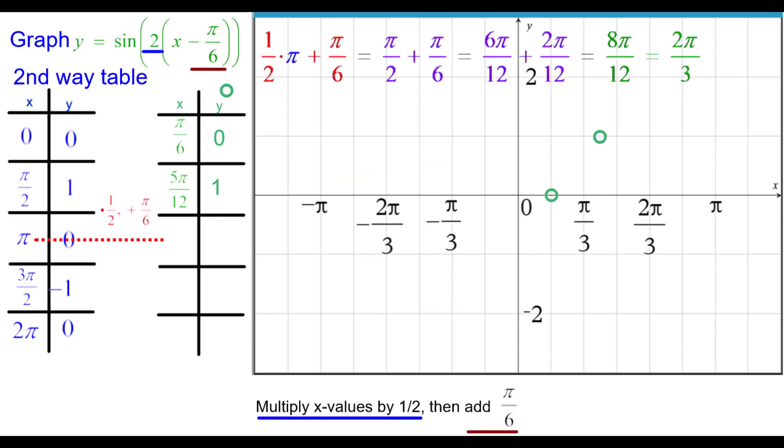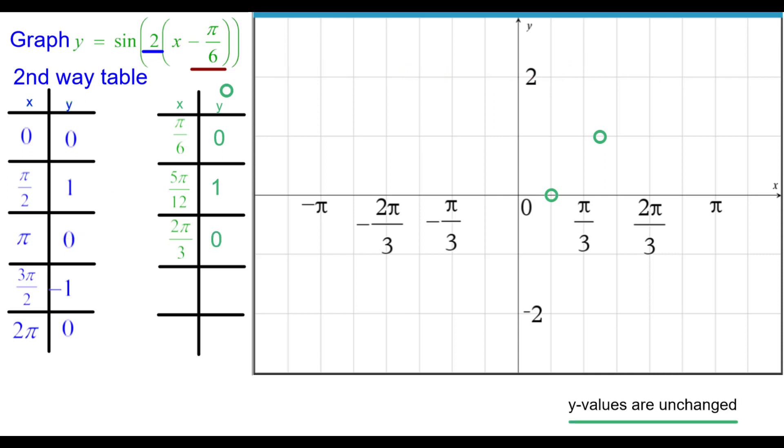Pi times 1 half plus pi over 6. Again, here are the calculations. Again, we used 12ths. So I guess I could have used 6ths as well for the common denominator. But it's over 2 pi over 3 and 0.